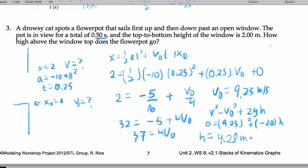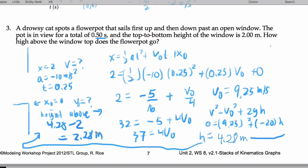So basically to finish the problem, I'll just work over here. So height above top is going to be 4.28 minus 2, which gives me 2.28 meters as my final answer. So that's question number 3.